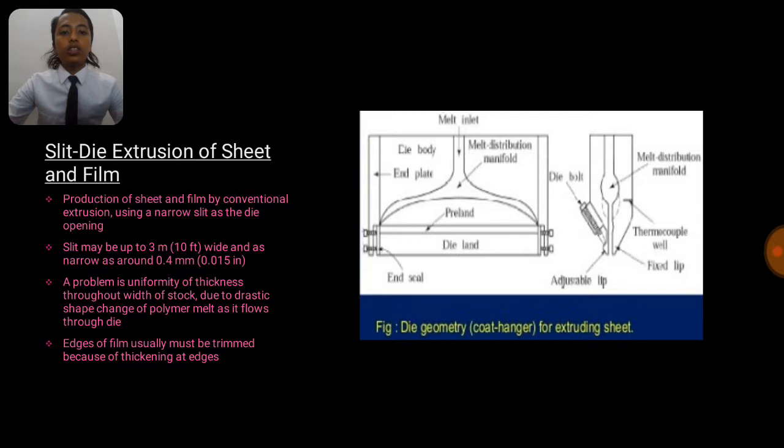For the slit die extrusion of sheets and film, the production of sheets and film by conventional extrusion using a narrow slit as the die opening. Slit may be up to 3 meter or 10 feet wide and as narrow as around 0.4mm or 0.015 inch. A problem is uniformity of thickness throughout width of stock due to drastic shape change of polymer melt as it flows through die. Edges of film usually must be trimmed because of thickening at the edges.